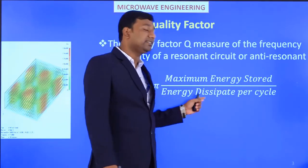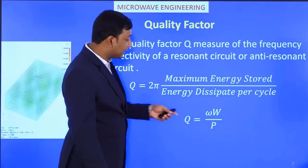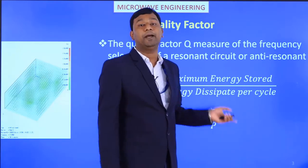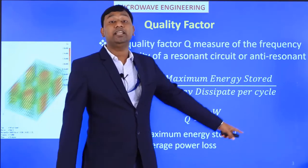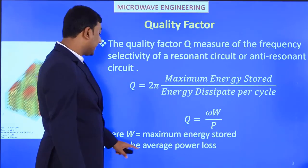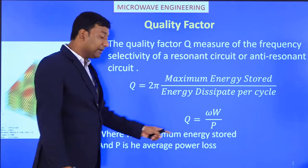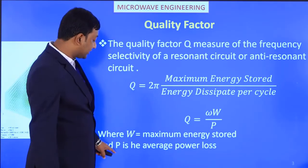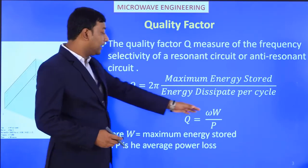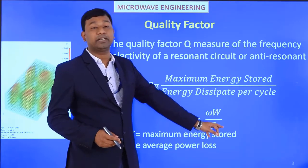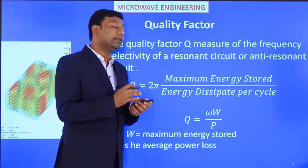We can write this equation as Q equals ω times W divided by P, where capital W equals maximum energy stored and P is the average power loss. First we will find out the maximum energy stored, then the average power loss, and placing those values into this equation will give us the quality factor of the resonator.